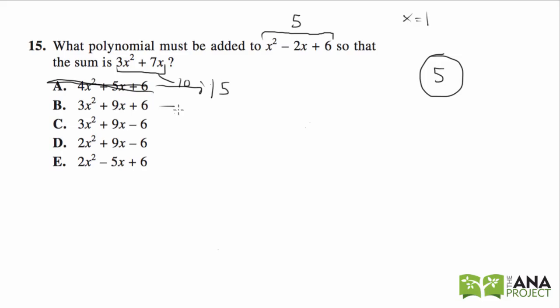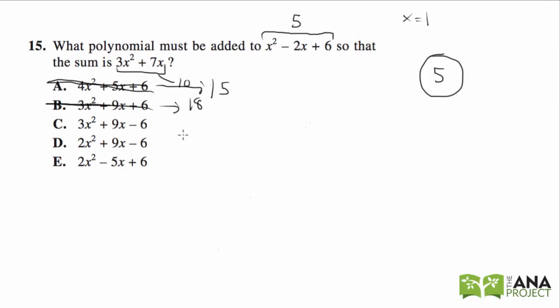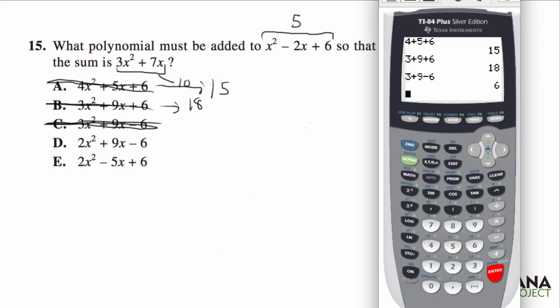That's 18. Nope, that's gone. We're looking for 5. Let's try C: 3 times 1 squared, which is 3, plus 9 times 1, which is 9, minus 6. That's 6. Getting closer, but it's not 5.